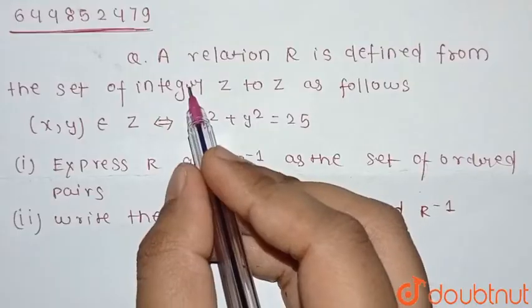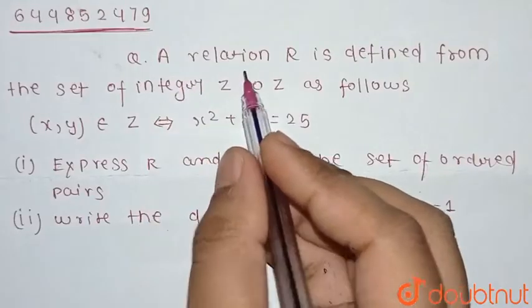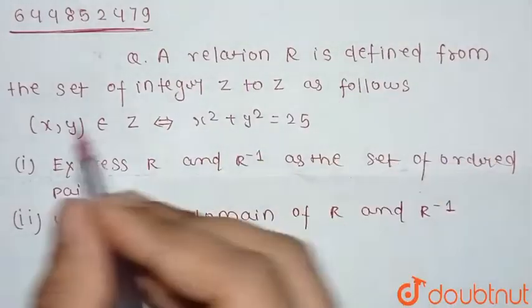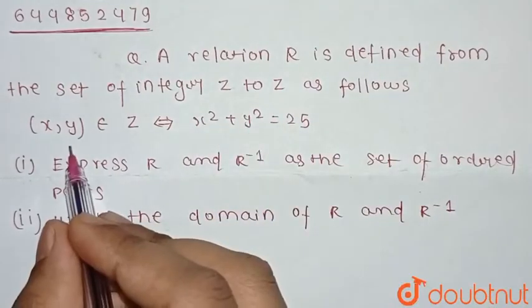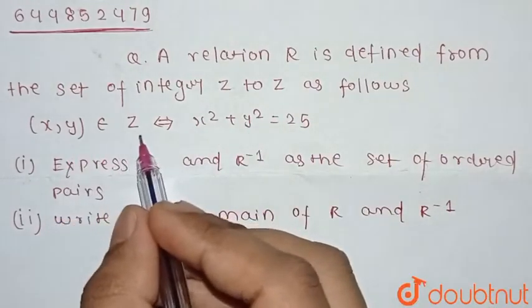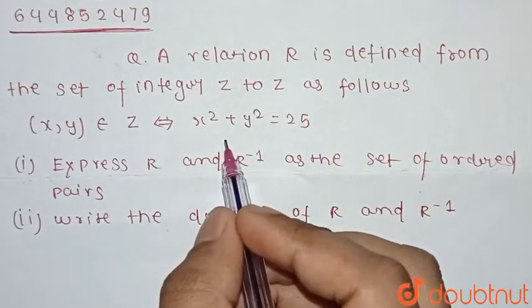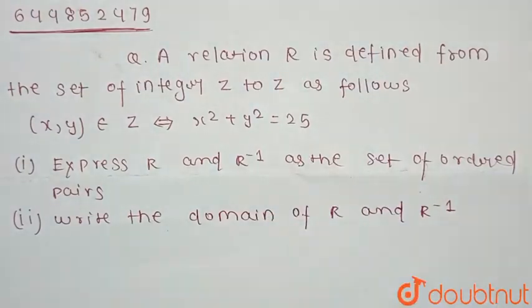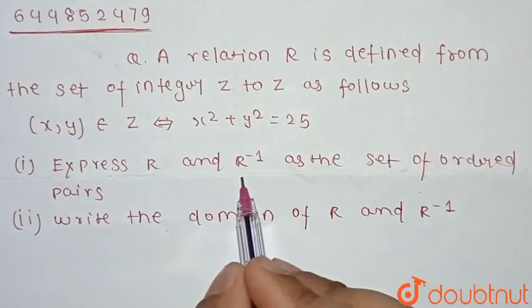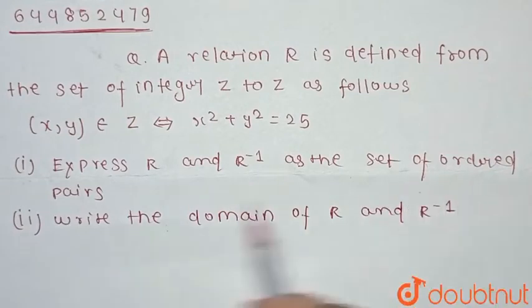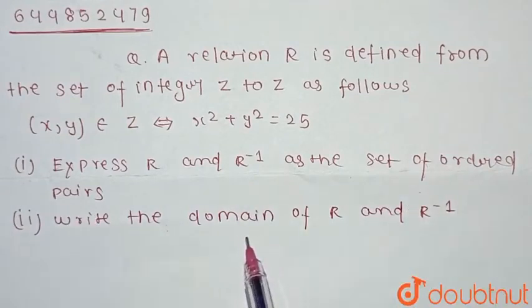Our question is: a relation R is defined from the set of integers Z to Z as follows — x, y belongs to Z such that x² + y² = 25. Our first task is to express R and R⁻¹ as sets of ordered pairs. The second task is to find the domain of R and R⁻¹.